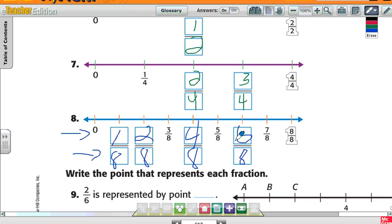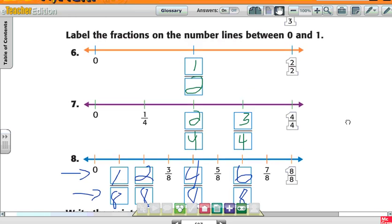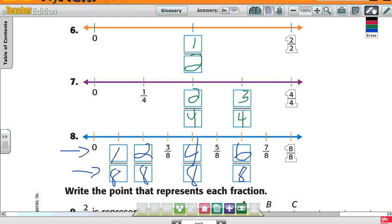So I have one-eighth, two-eighths, three-eighths, four-eighths. Wow, look. Check this out. One-half is the same thing as two-fourths, but it's the same thing as four-eighths. They all equal a half. Because aren't they in between their number lines? Yes.